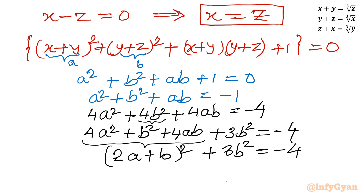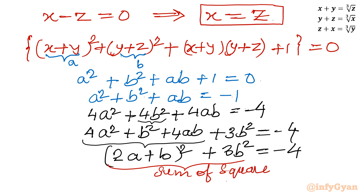Now the key point is: the sum of two squares cannot be negative for real solutions. You can see this is a sum of squares on the left, and the right-hand side is a negative number. So this equation is not true for real solutions. We will reject this case — it gives no real solutions. Rejected.